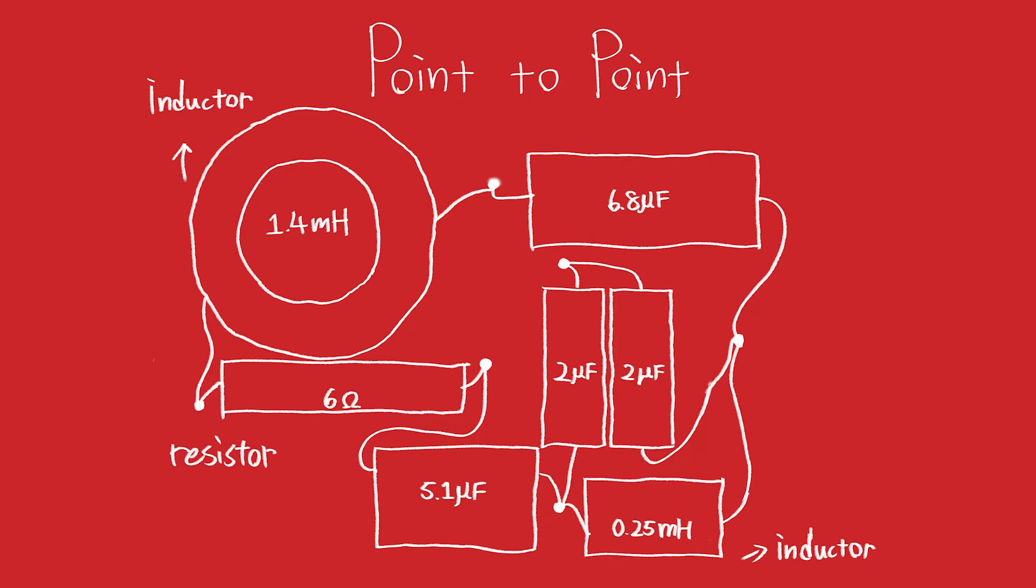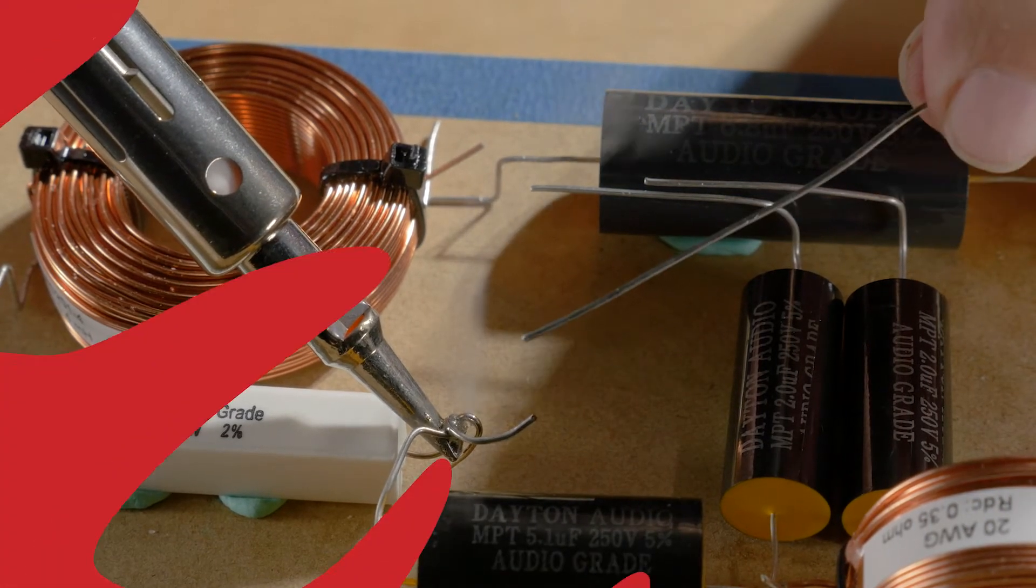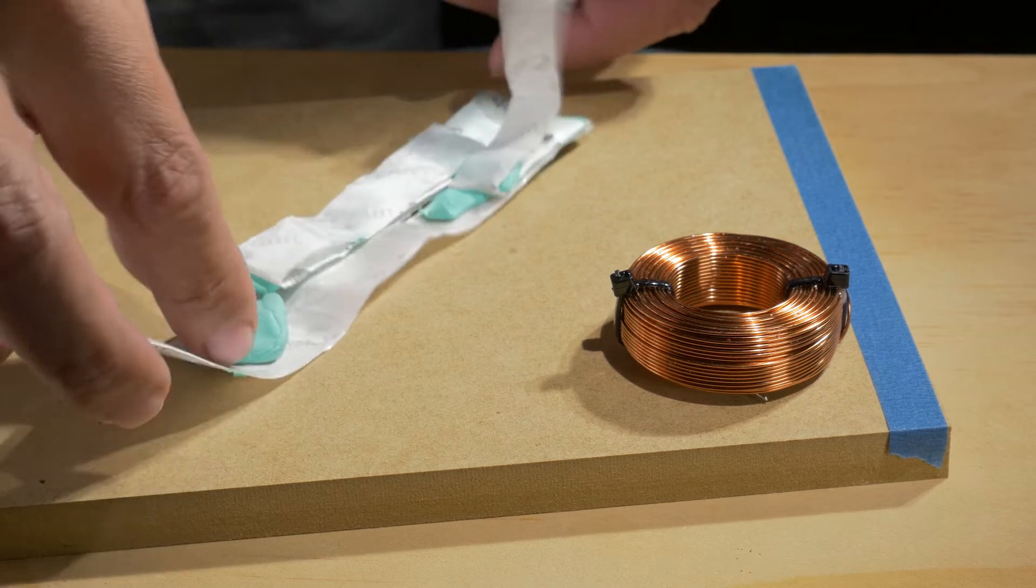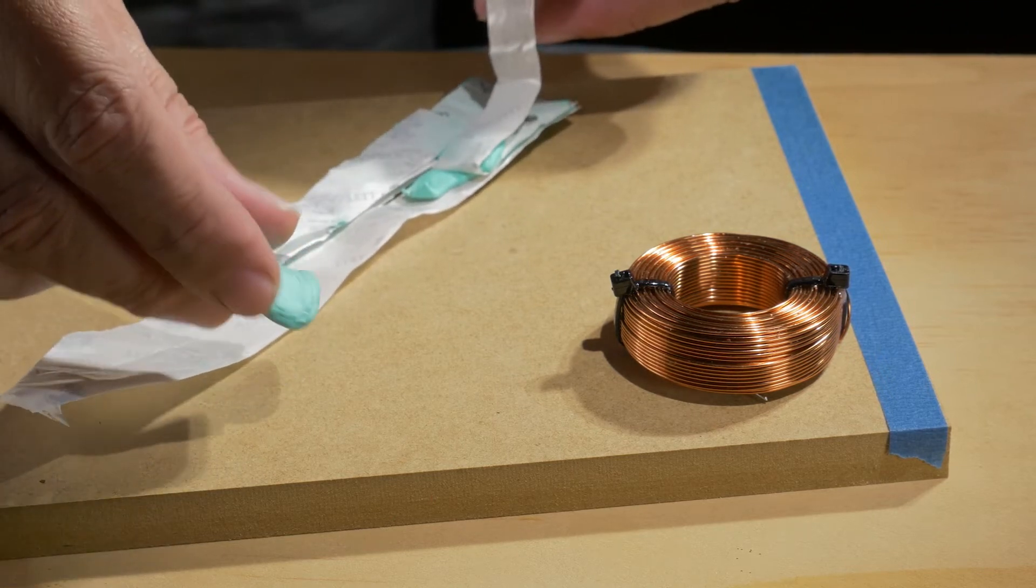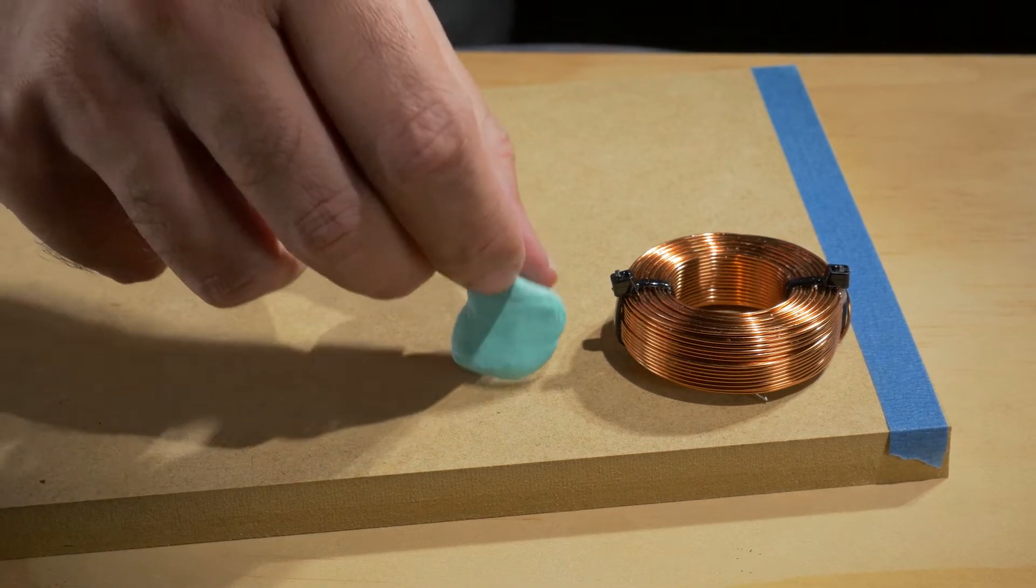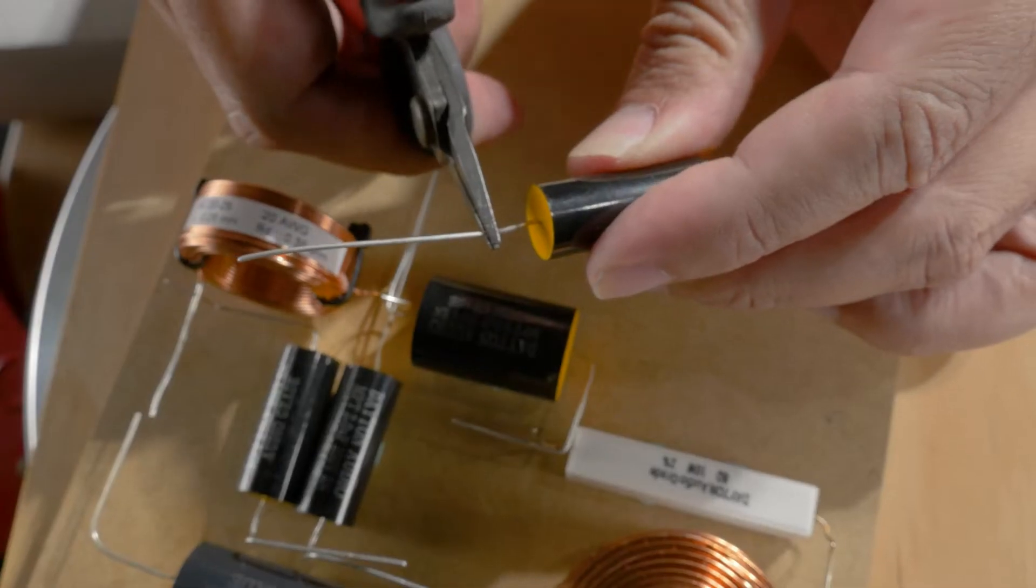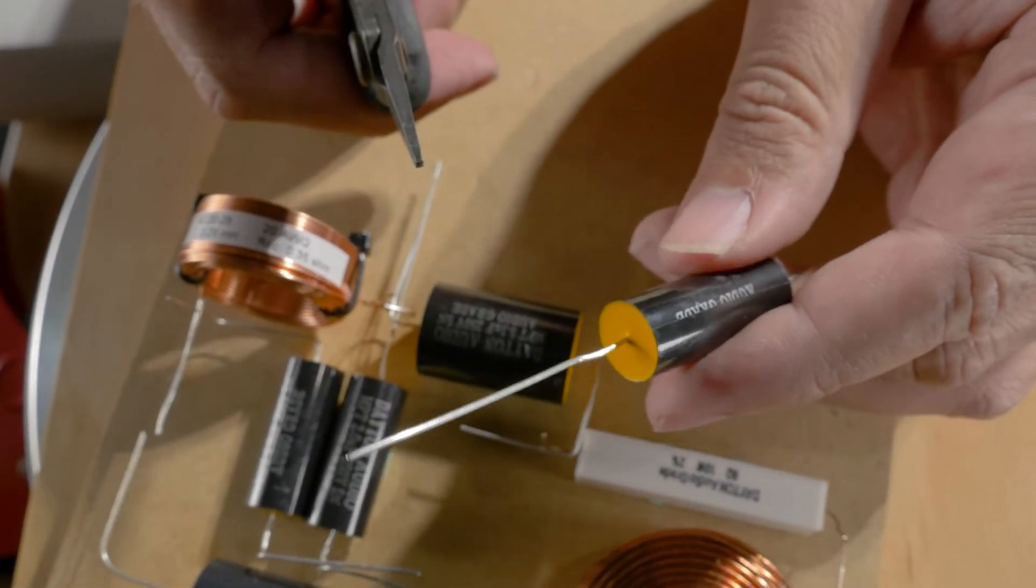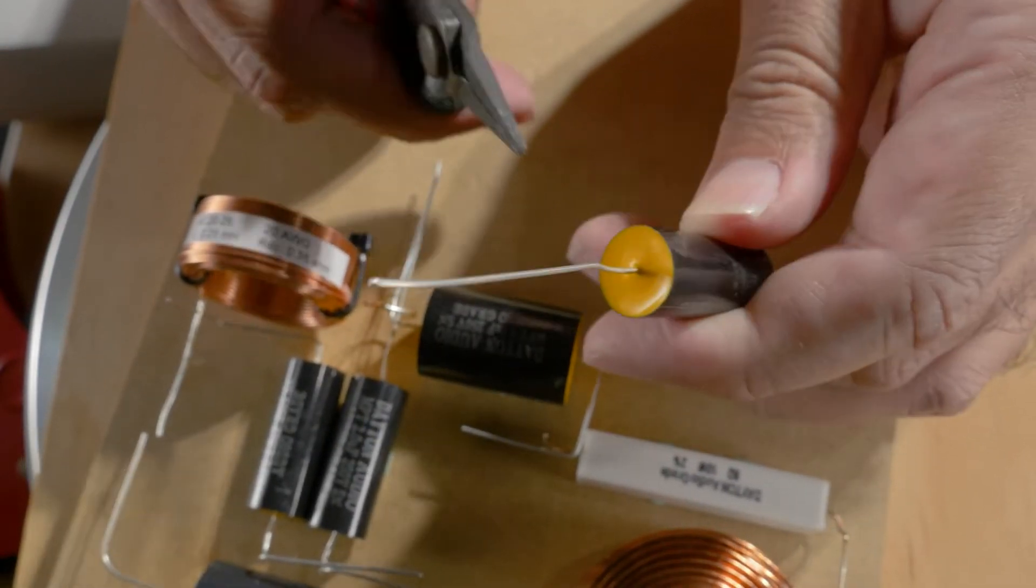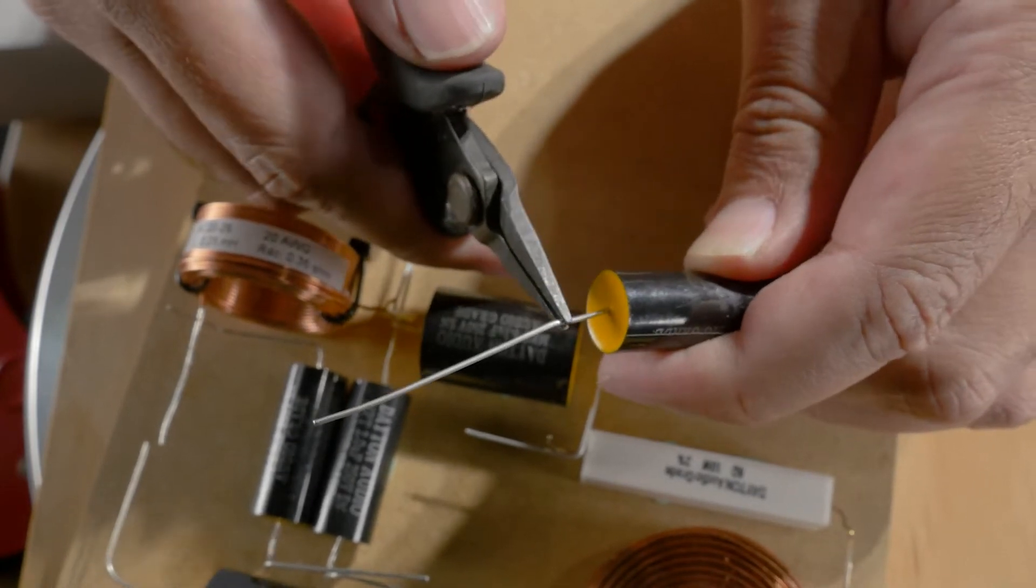The construction method for this crossover is point to point, which means we are just going to solder one leg of a component to another leg of a component. I like to use this stuff called blue tack to hold down my components while I do my layout and soldering. You usually see it on walls holding up posters, but it actually holds down components securely enough so you can get your soldering done.